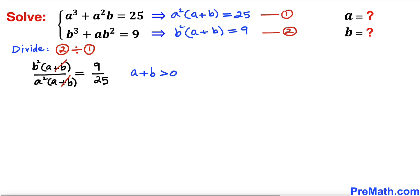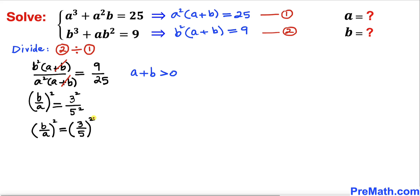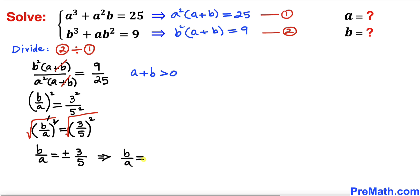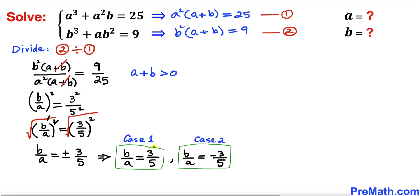The (a + b) terms cancel, leaving b²/a², which can be written as (b/a)² = (3/5)². Taking the square root of both sides, we get b/a = positive or negative 3/5. So there are two cases: b/a = 3/5 and b/a = −3/5.